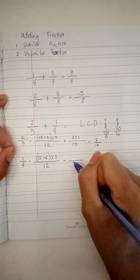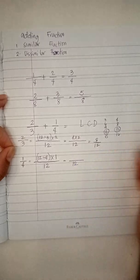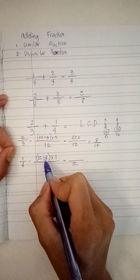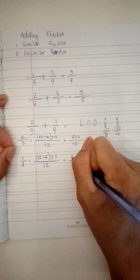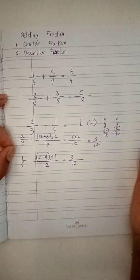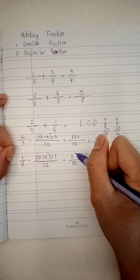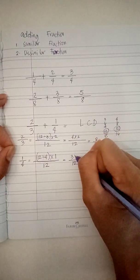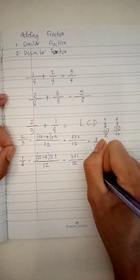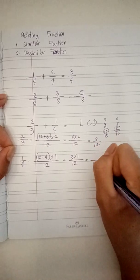Let's proceed. Just copy the least common denominator. Twelve divided by four equals three. Three times one equals three.